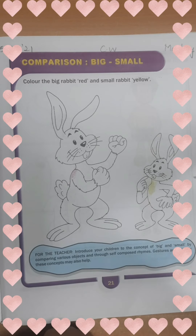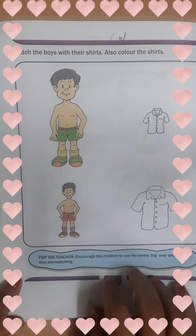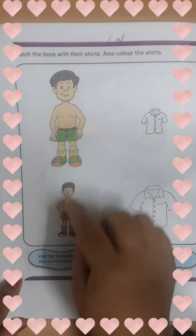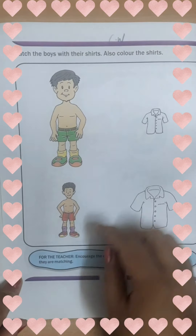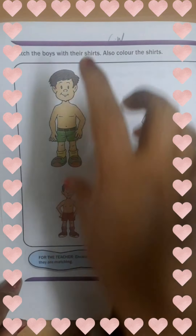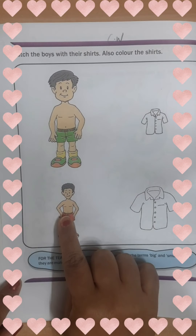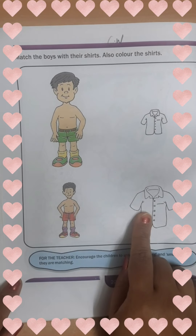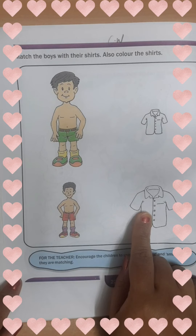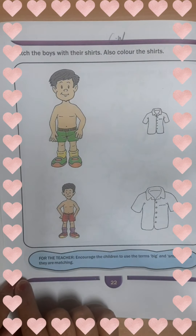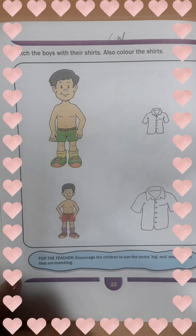Now let's turn to page number 22. Match the boys with the shirt and also color the shirts. There are two boys — one is small and the other is big. There are two shirts. If we make the small boy wear the big shirt, it will look like a scarecrow. And if the big boy wears the small shirt, it won't fit him properly.